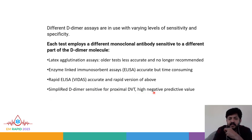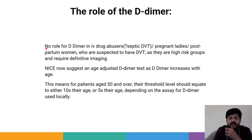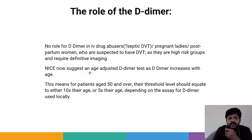There are different D-dimer assays with varying levels of sensitivity and specificity, each employing a different monoclonal antibody sensitive to a different part of the D-dimer molecule. Assays used include latex agglutination assays, ELISA, rapid ELISA, and SimpliRED D-dimer — the latter being sensitive for proximal DVT with a very high negative predictive value. There is no role for D-dimer in pregnant ladies, postpartum women, or IV drug abusers suspected of DVT, as all are very high-risk groups requiring definitive imaging. NICE now suggests an age-adjusted D-dimer, as D-dimer increases with age — for patients aged 50 and over, the threshold should be 10 times or 5 times their age depending on the local assay used.